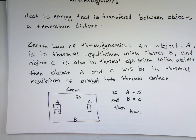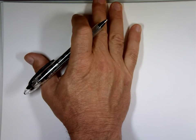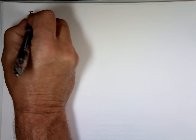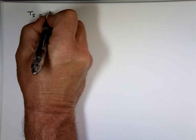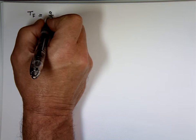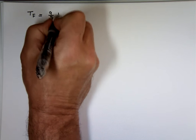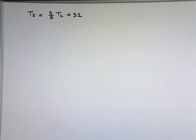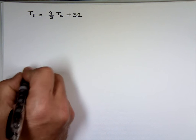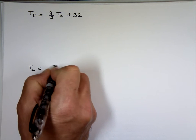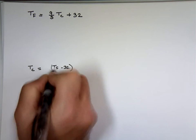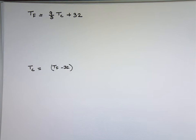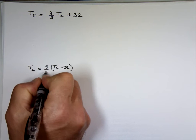When we measure temperature, we use different scales: Fahrenheit, Celsius, and Kelvin. To convert Celsius to Fahrenheit, use T_F = (9/5) × T_C + 32. To go the reverse, from Fahrenheit to Celsius, use T_C = (T_F − 32) × (5/9). That's how we convert back and forth between the two scales.